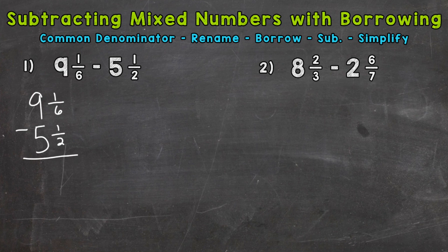So can we subtract this problem as is? No, because the fractional parts of these mixed numbers do not have common denominators, so we can't subtract. We need to find a common denominator and rename. The least common denominator for six and two is going to be six, so let's rename with that common denominator.